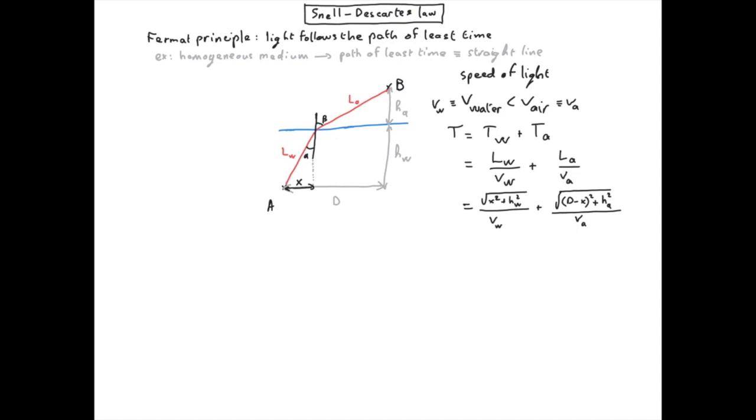So we have expressed the total time for the path as a function of x. Everything else in this expression is just constant. So only x is a variable and knowing x is enough to specify entirely the path between A and B.